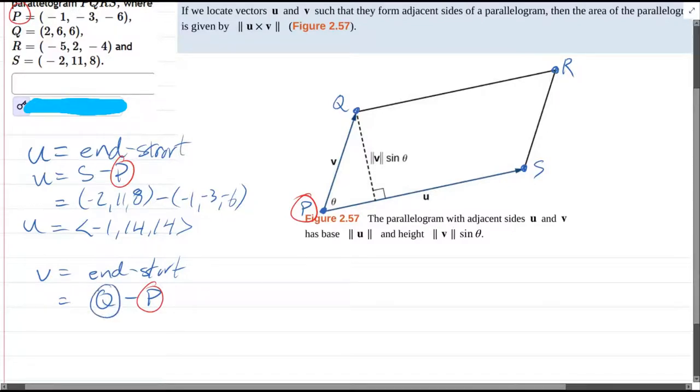Do I have to use Q? No, I could actually use R instead. But I've already written Q so we're going to go with Q. (2, 6, 6) minus P, (-1, -3, -6).